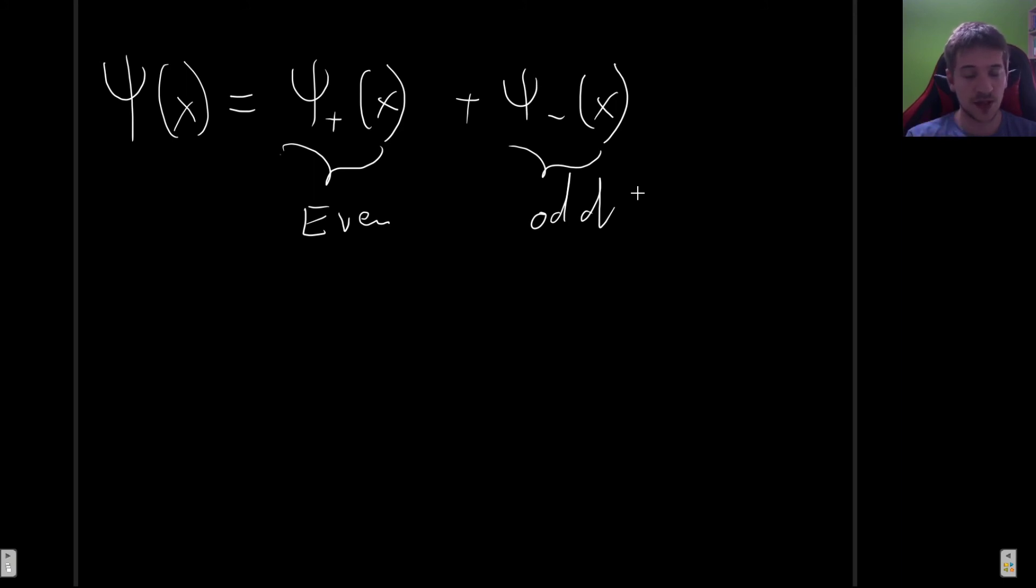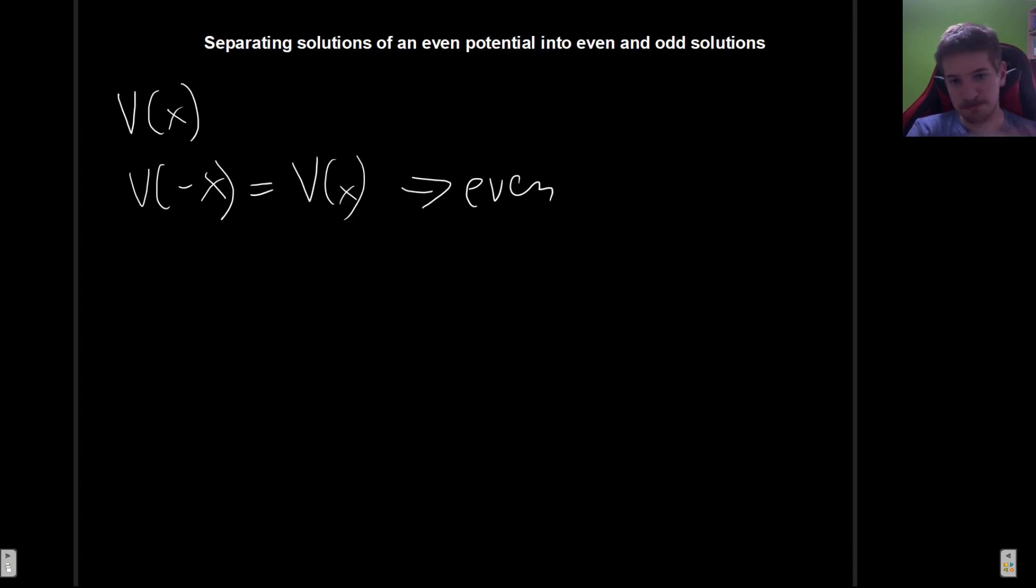So in the next video, we will be discussing an example, but not using this trick. And then I will make another video with the same example, but using this trick so that you can see why this is so useful. So just to go through this again, what we just showed is that if we have an even potential, we can take the solutions to be the sum of even and odd solutions. That's what we just proved. And well, that's what I wanted to do in this video. So I will see you in the next one.